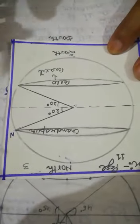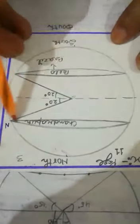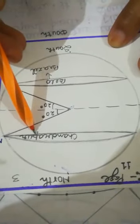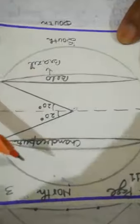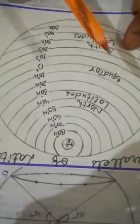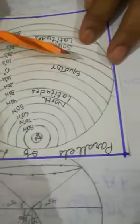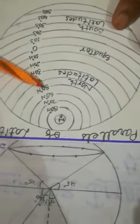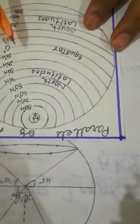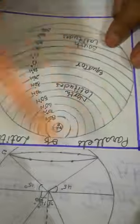Somewhere along the 20 degree north latitude, Chandrapur can be located — it can be anywhere on that circle, but at least we know it is in the northern hemisphere. As we move away from the equator toward the poles, the size of the parallels of latitude decreases. From 0 to 10, 20, 30, 40, 50, 60, 70, 80, 90 — we reach a single point. The equator is the largest latitude.